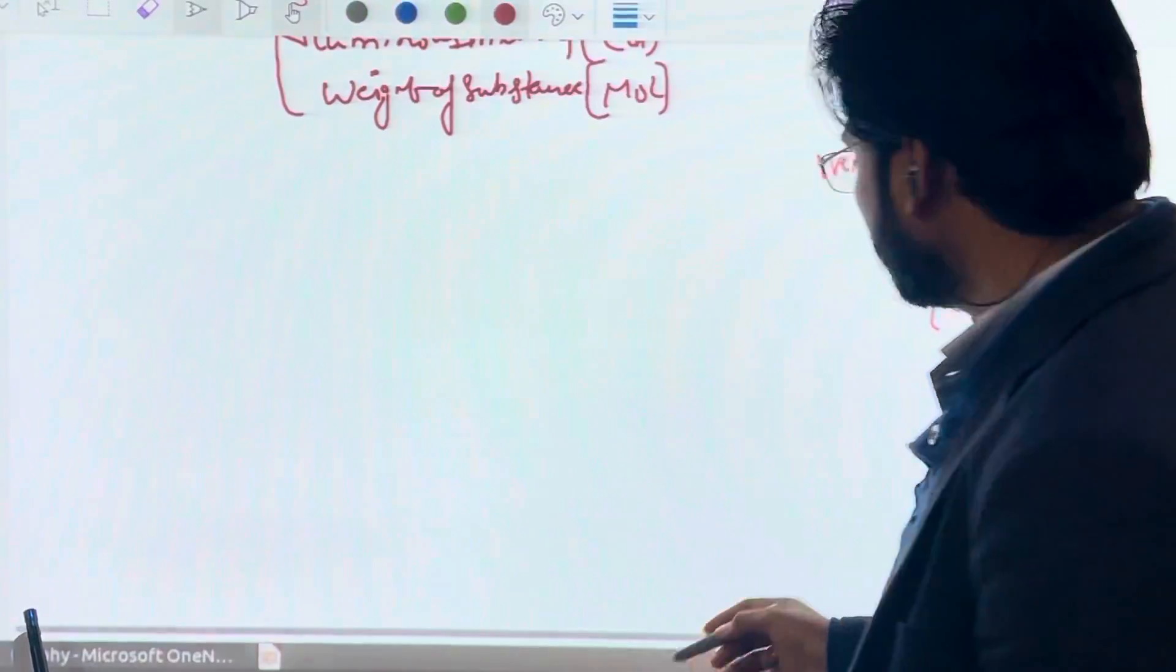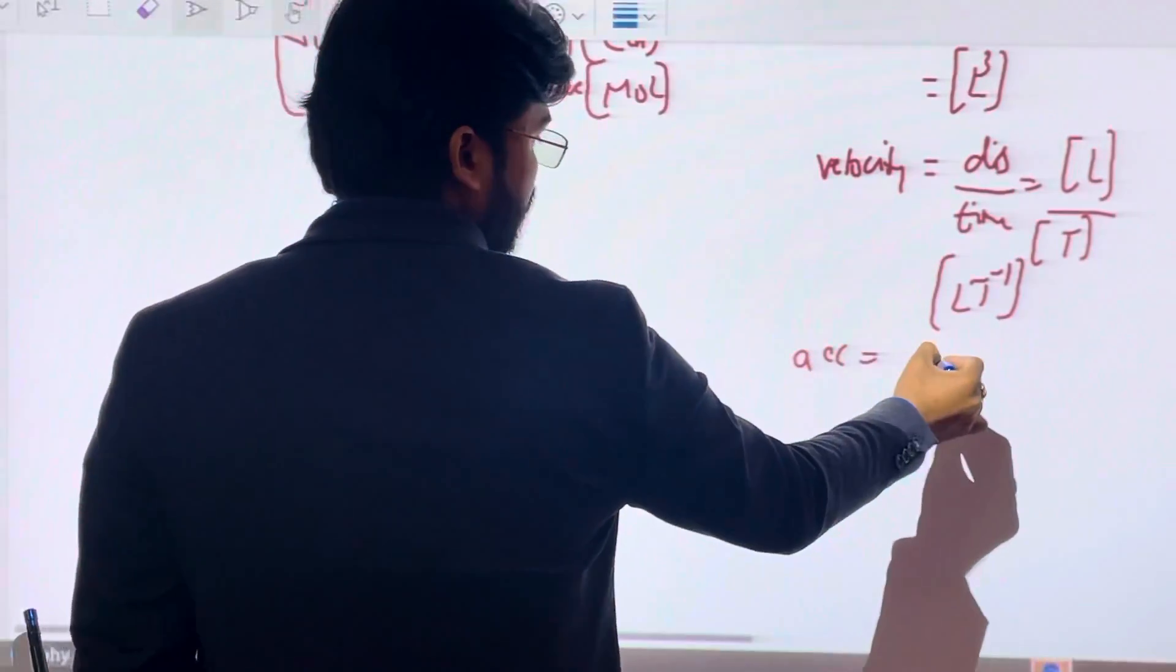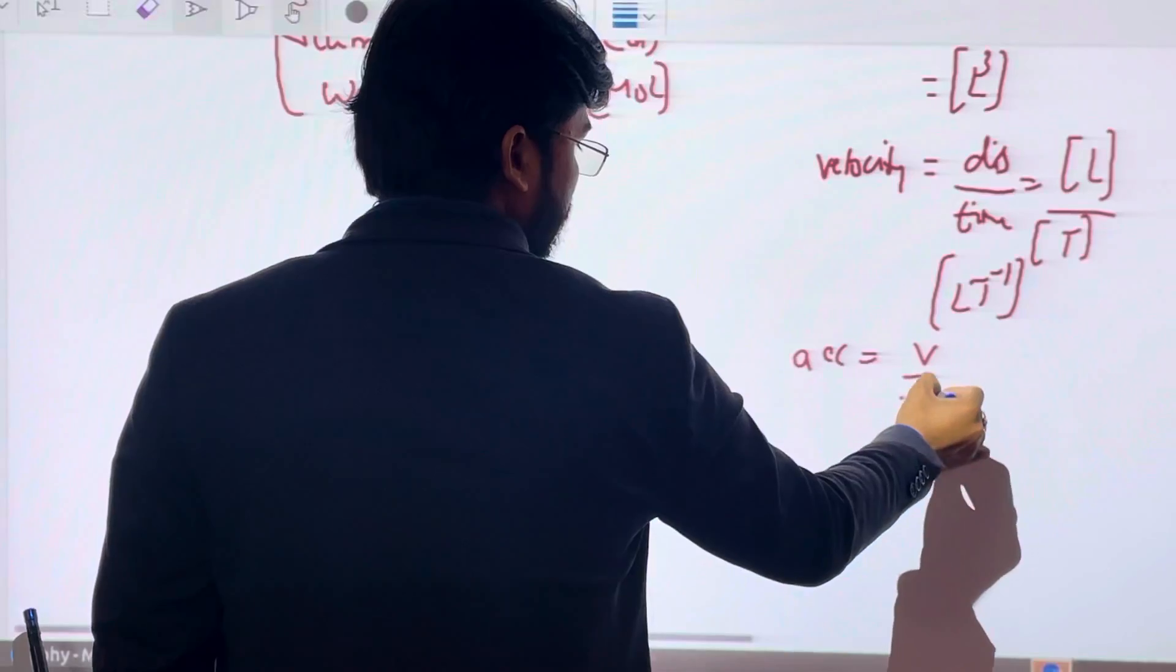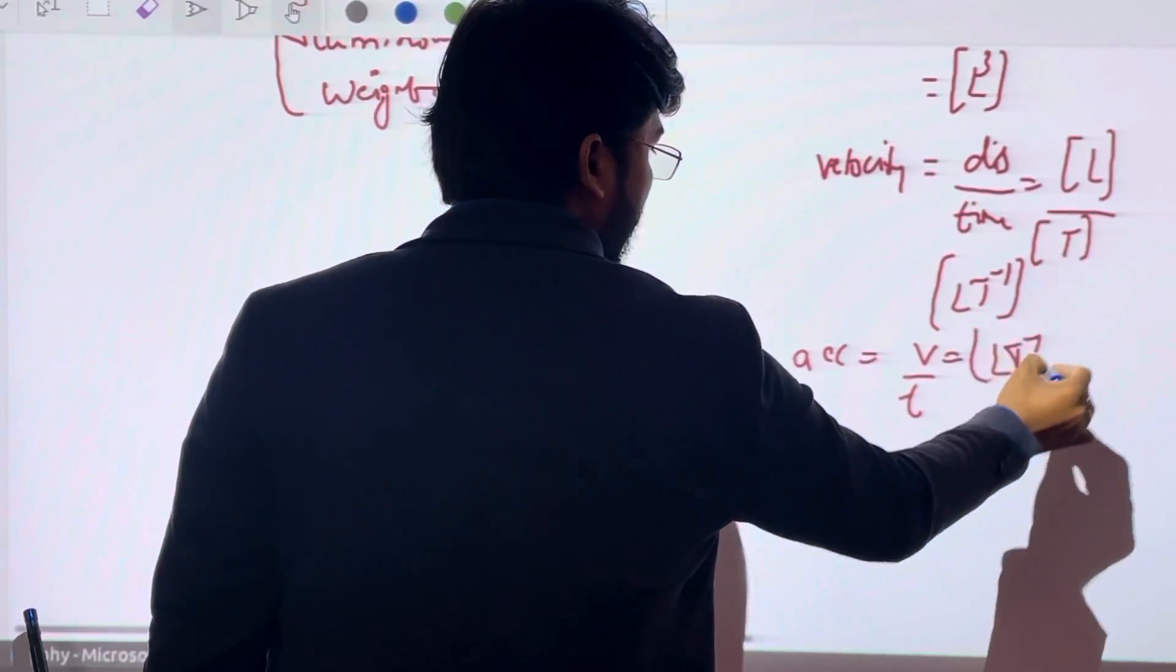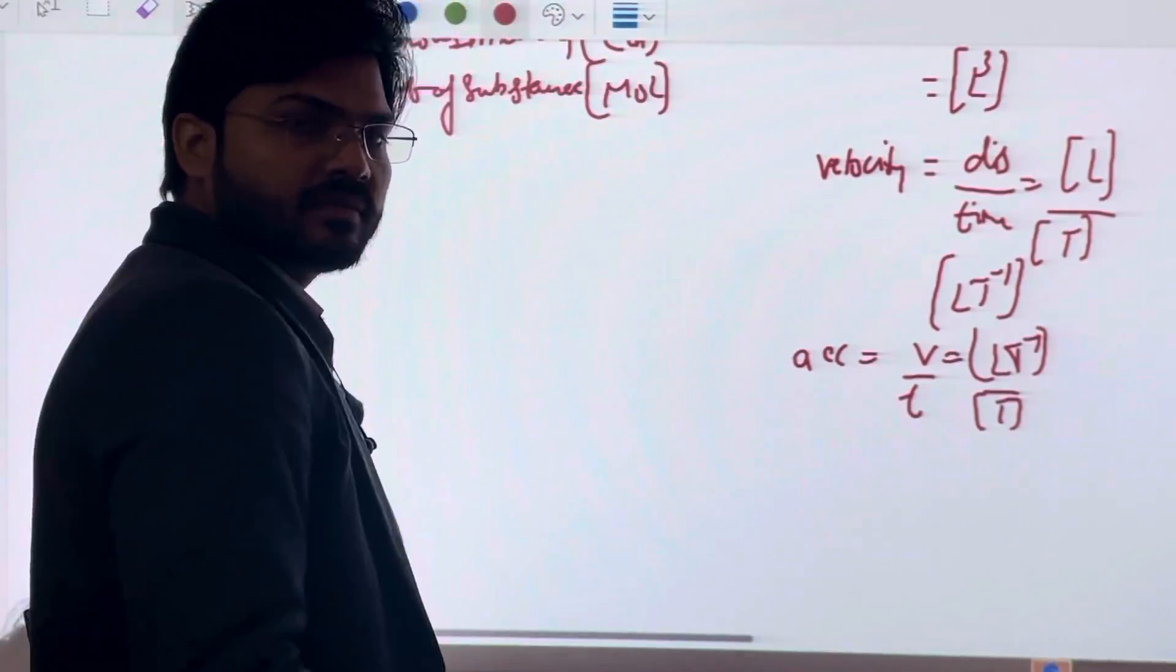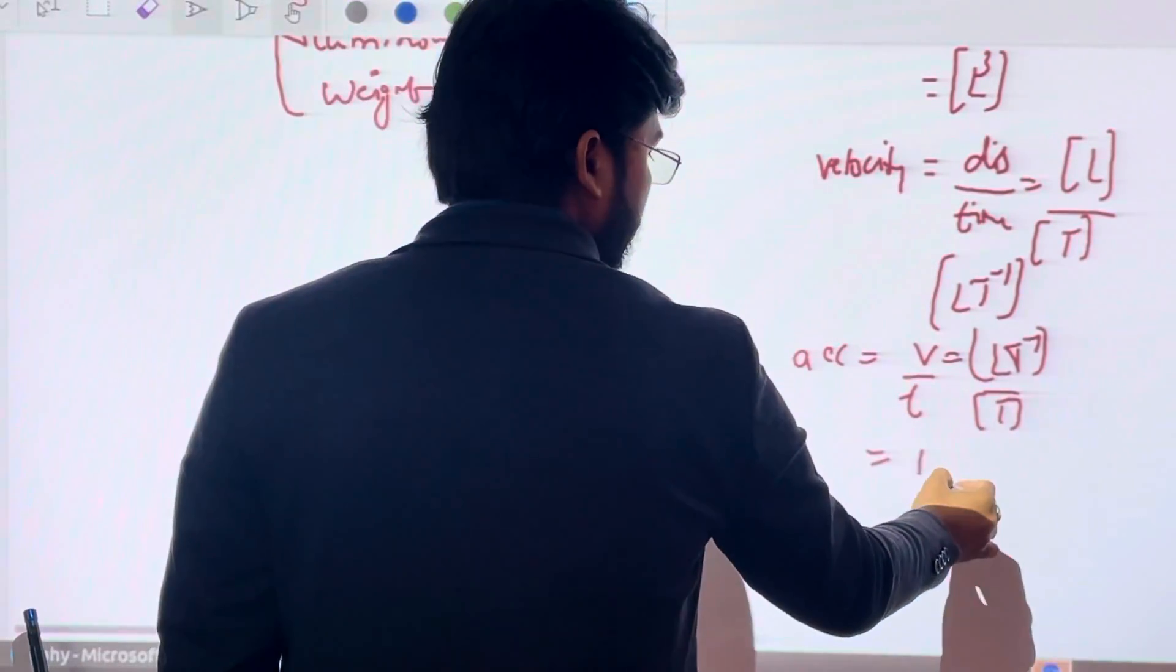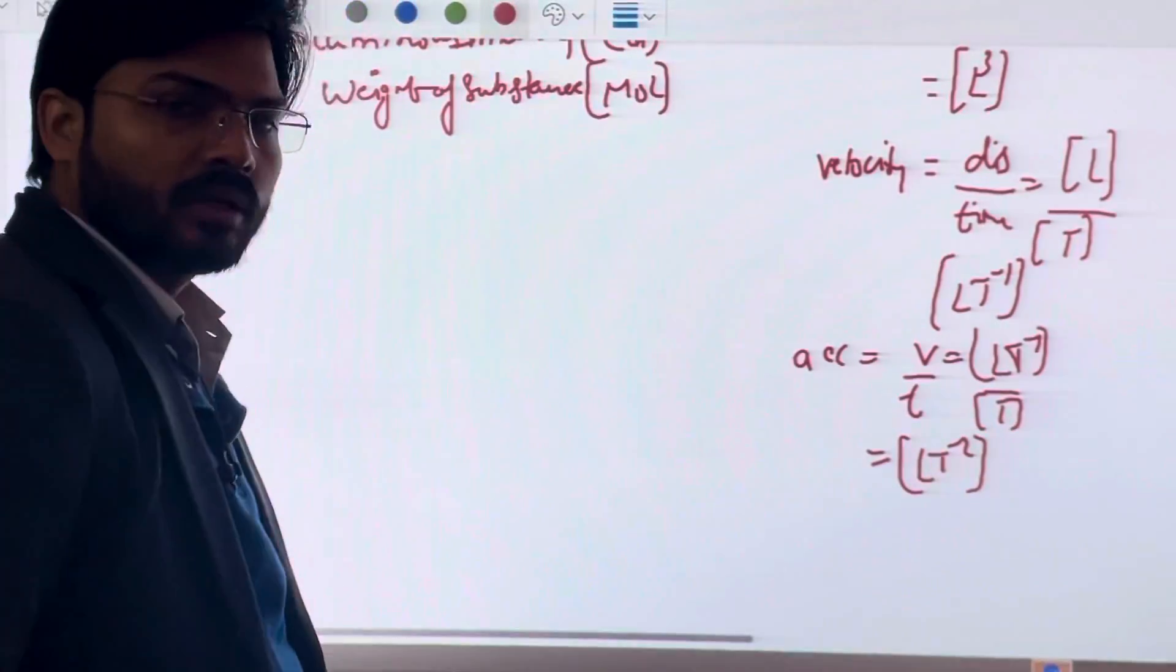Similarly, acceleration. Acceleration is change in velocity V upon T. Velocity dimension LT minus 1 and time dimension T, so acceleration dimension is LT minus 2.